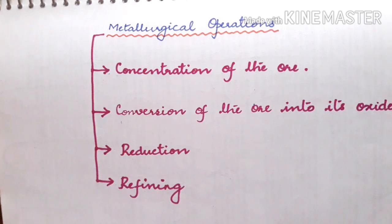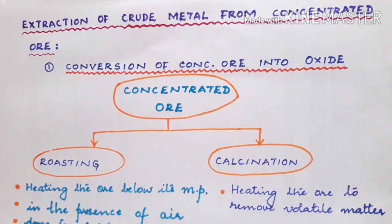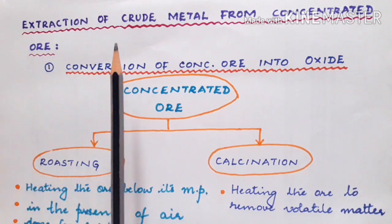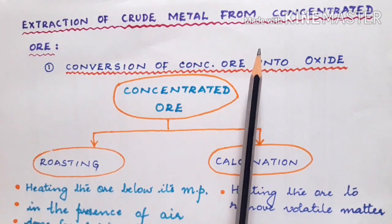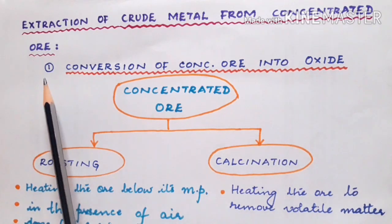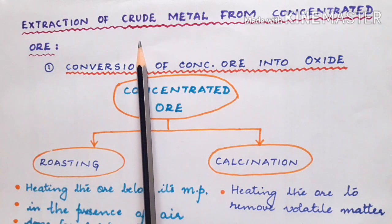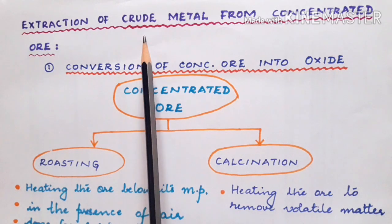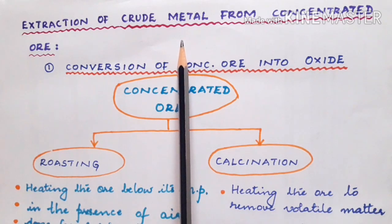The second step involved is known as conversion of the ore into its oxide. Today we shall discuss extraction of crude metal from the concentrated ore. What do you understand by crude metal? The impure metal is known as crude metal.